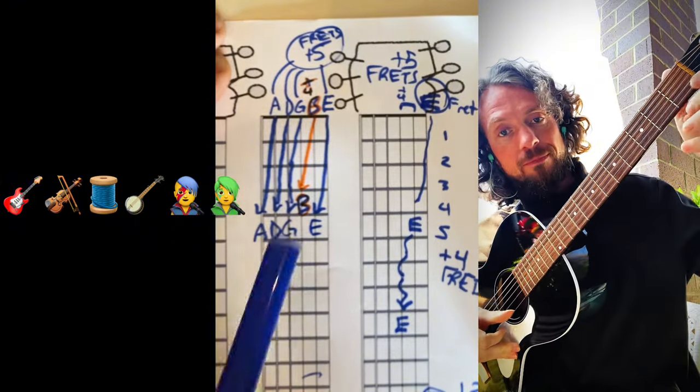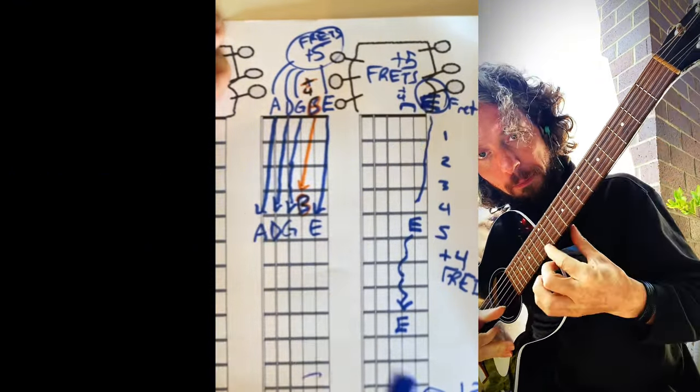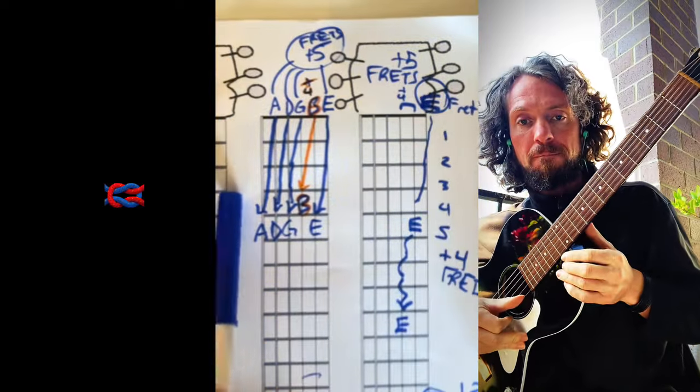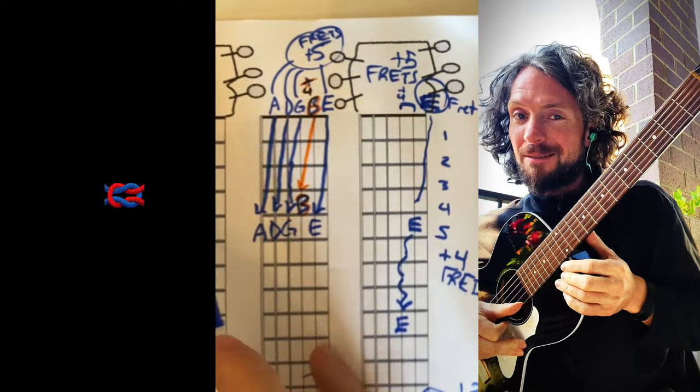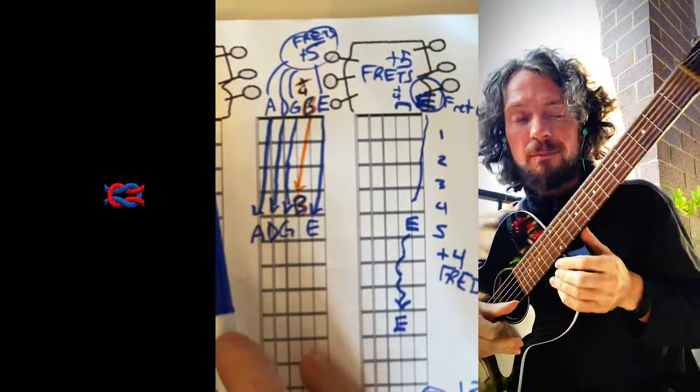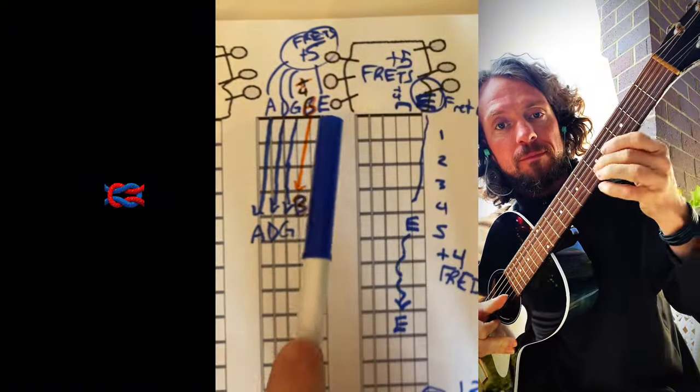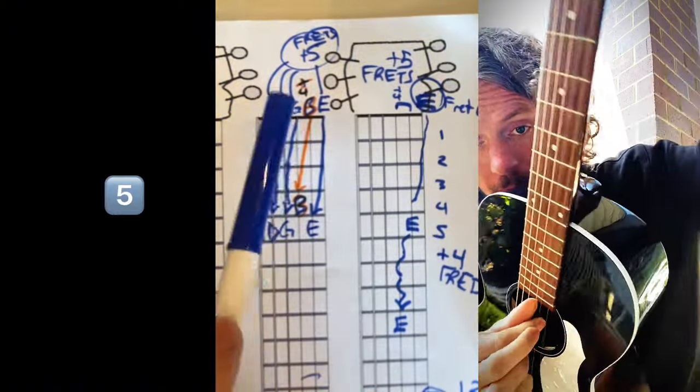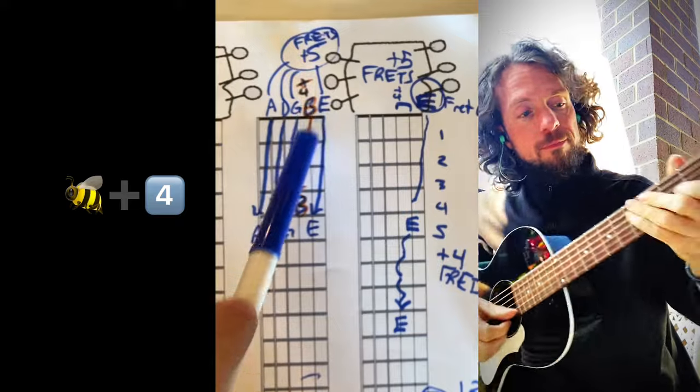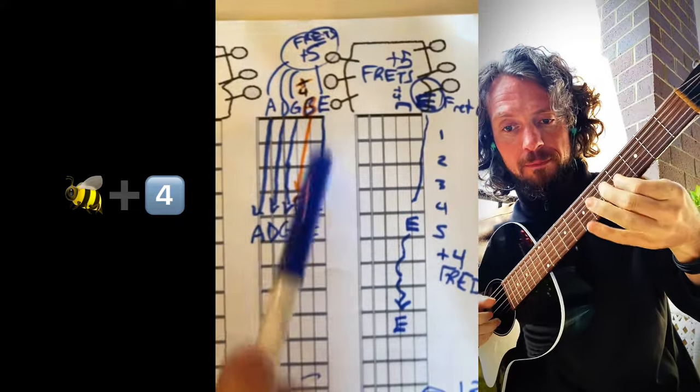So these are some really helpful tips. Plus 12 on the same string is the same letter. Crossing strings is where it gets a little bit more involved, but the tuning in normal tuning is plus five on all the strings except for the B string to the string larger. Plus five... B is plus four.